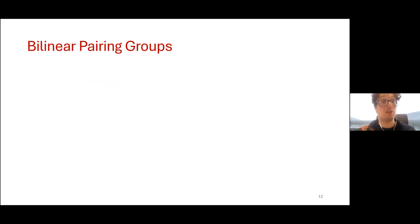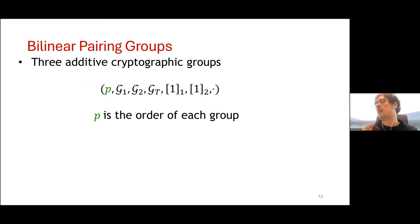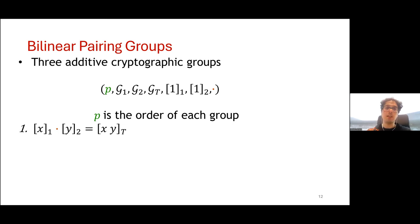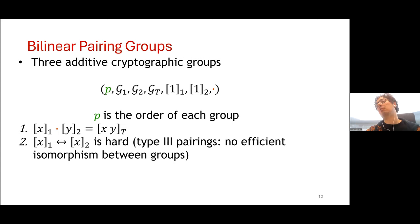Groups used in today's state-of-the-art applications have additional structure. We suppose the existence of three groups — G1, G2, and G_target — of the same prime order p. Group elements are indicated with subscript brackets for their respective groups. We have a pairing operator: the element of order x in G1 paired with the element of order y in G2 gives the element of order x times y in G_target. This is a way to perform one and only one multiplication and check the result in a third group. It is also hard to compute isomorphisms between the two groups — this is the structure for state-of-the-art pairing-based cryptography.